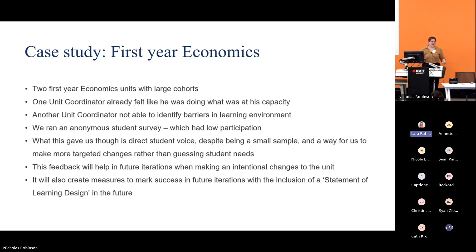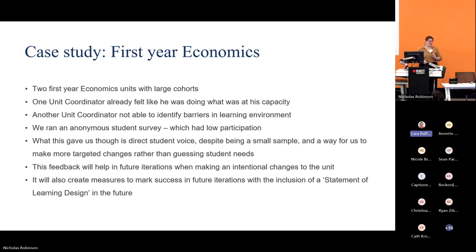So we ran an anonymous survey, open for a week to both cohorts of students. When they entered the survey, they were entered into a lucky draw to win one of ten $50 vouchers — so 20 $50 vouchers across the two units. And despite all of that, we still had incredibly low numbers of submissions. The units had over 500 students and we only got about 60 surveys per unit — incredibly low, but it gave us targeted feedback.